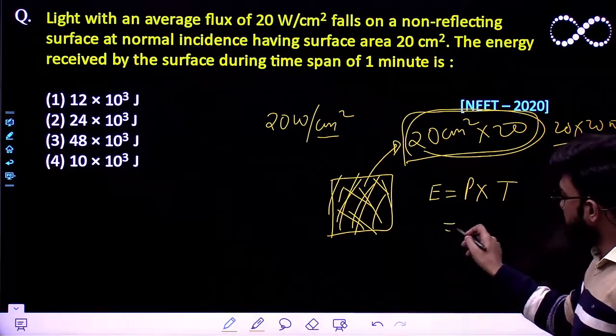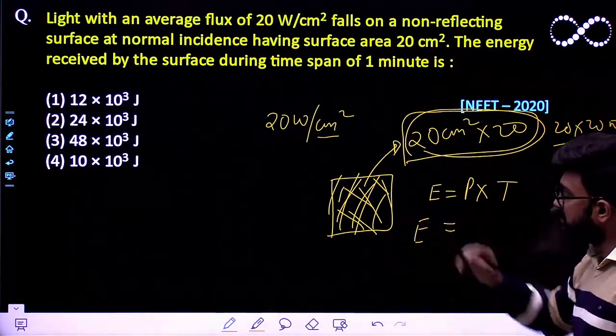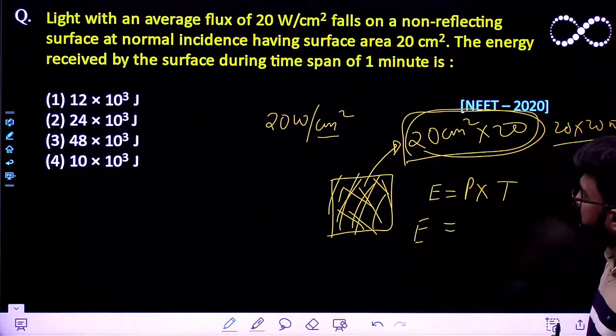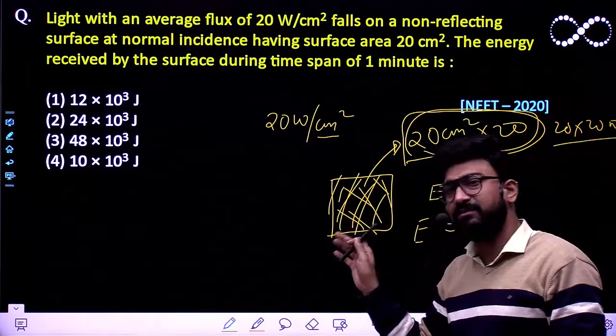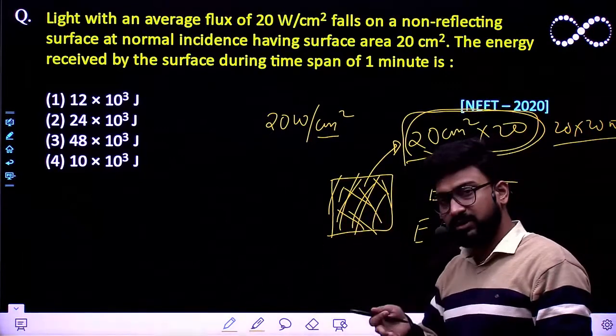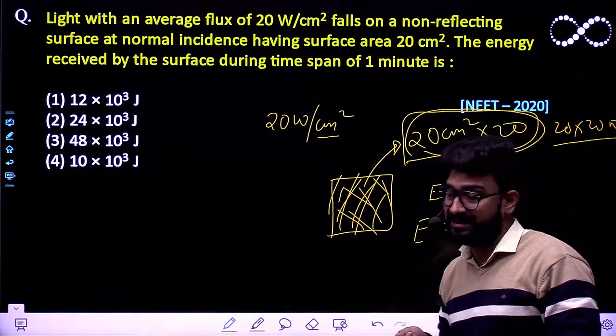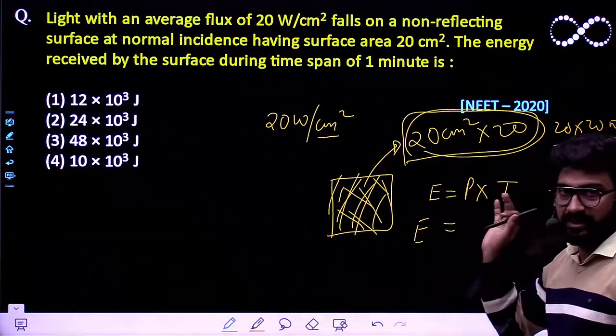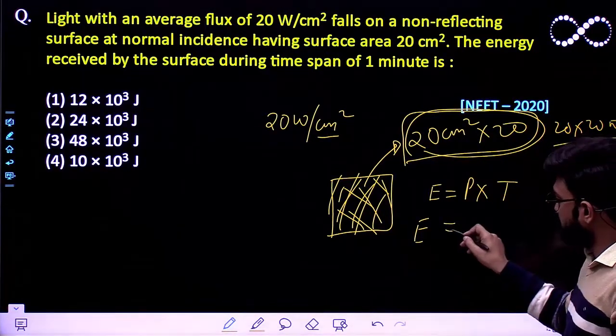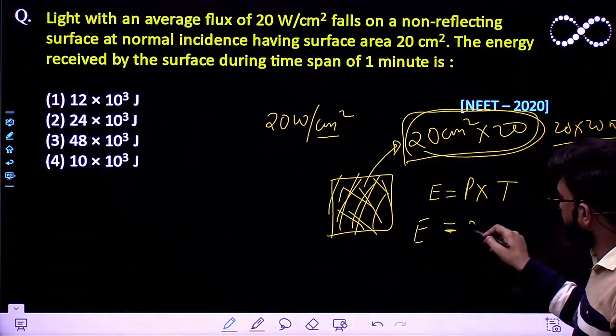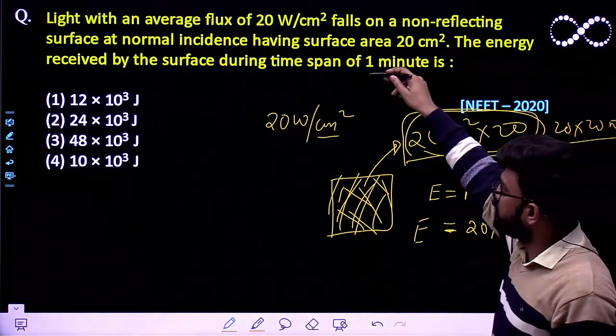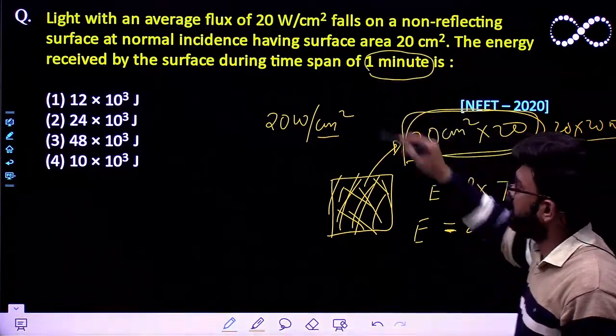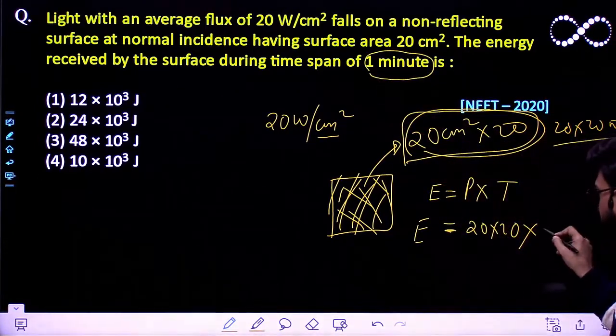So the total energy supplied to this surface is, since it is a non-reflecting surface, so whatever the energy is being supplied it will be absorbed. It won't be reflected. So that means the whole energy would be absorbed by it. So that means E must be equal to power into time. Power is nothing but 20 into 20, into time. We have to calculate the total energy supplied in one minute. In one minute you will be having 60 seconds.